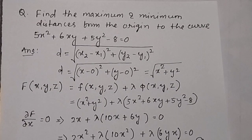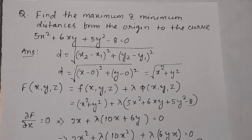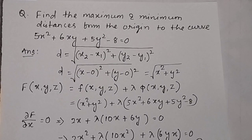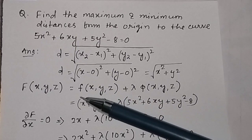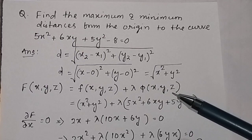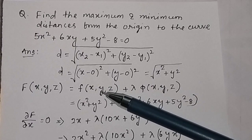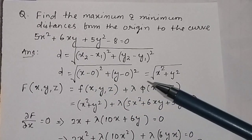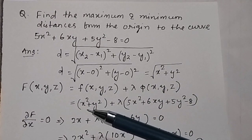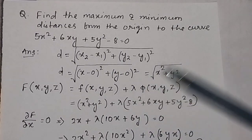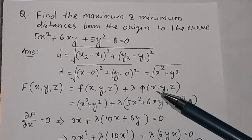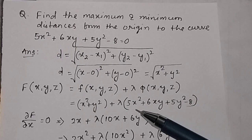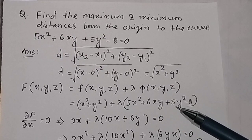We apply constraint optimization using the Lagrange multiplier to find the maximum and minimum distance. In this method, any function is represented as f(x,y,z) + λ·φ(x,y,z). Here the objective function is d² = x² + y², λ is the Lagrange multiplier, and the constraint condition is 5x² + 6xy + 5y² - 8 = 0.